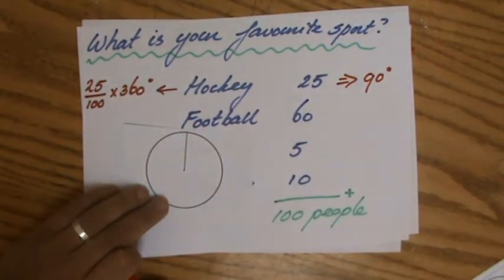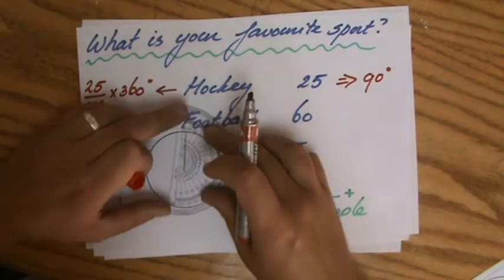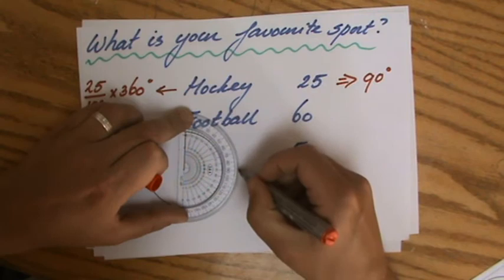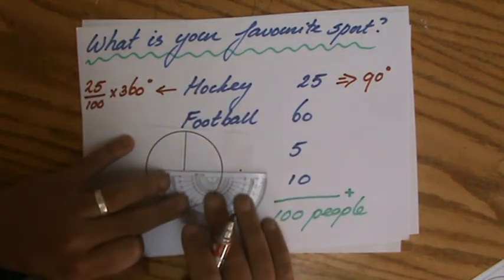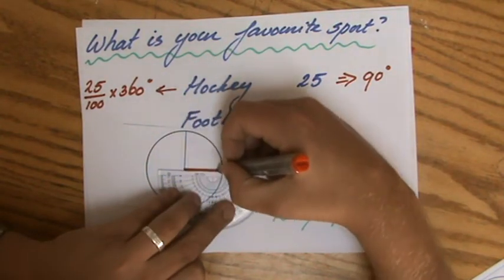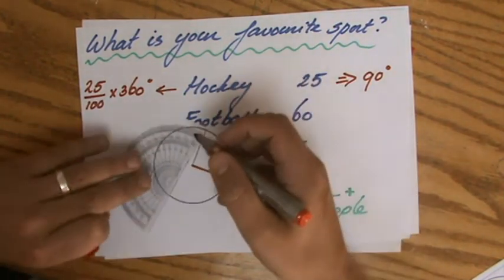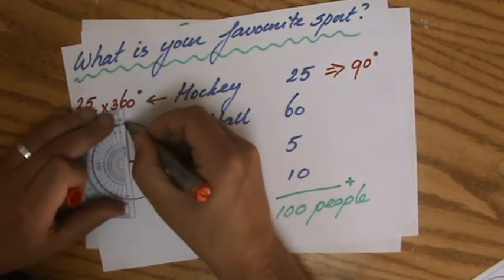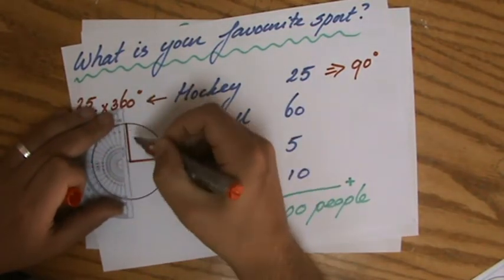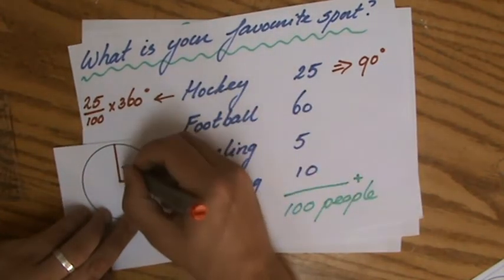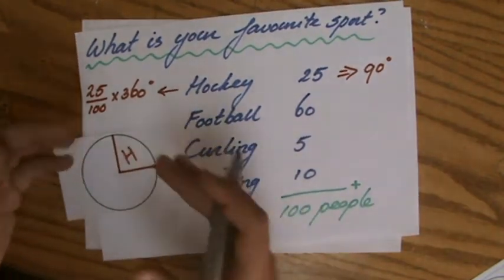With my pie chart, I'm going to put my protractor on it, measure 90 degrees. Of course that is a perpendicular angle, 90 degrees. You should do this with a sharp pencil. I'll just put a big H in it for hockey, so you can easily see a quarter of the people like hockey.